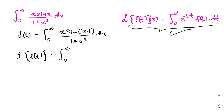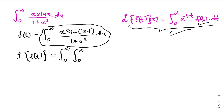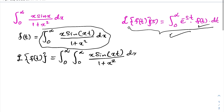We substitute our f(t), which is the integral from zero to infinity of x times sine of xt over one plus x squared dx, and multiply by e to the minus st dt.